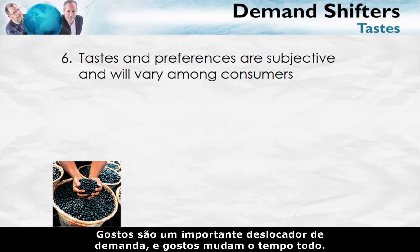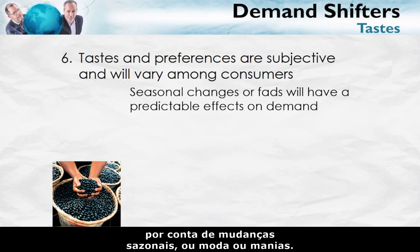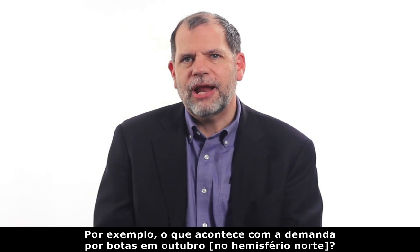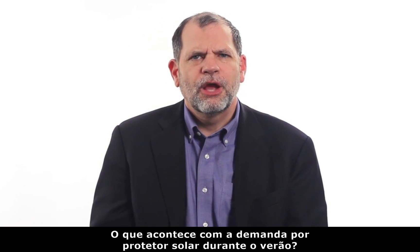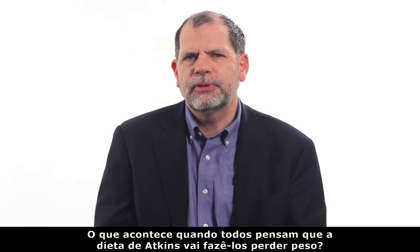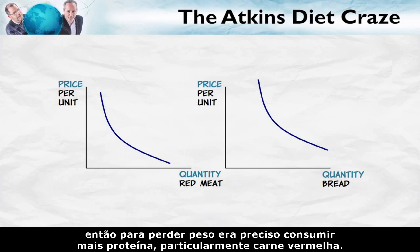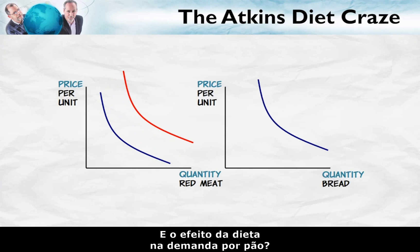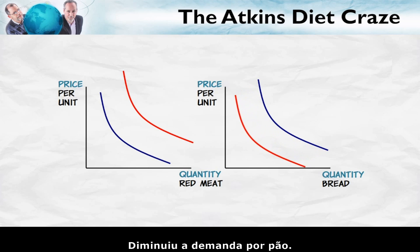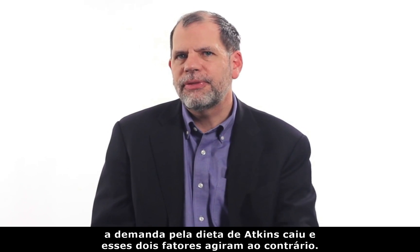Taste is an important demand shifter, and tastes change all the time. Tastes differ among consumers and also differ over time because of seasonal changes, fashions, or fads. What happens to the demand for boots in October, swimsuits in June, or sunscreen during the summer? The Atkins diet said that carbohydrates make you fat, so the way to lose weight was to consume more protein and red meat in particular. The Atkins diet increased the demand for red meat and decreased the demand for bread. However, when Atkins later had a heart attack, the demand for the Atkins diet went down, and those two factors went into reverse.